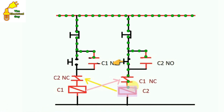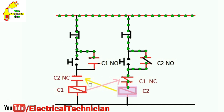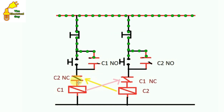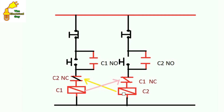Now if we press the start push button for C2, this circuit will be completed, current flows ahead and C2 contactor gets picked up. When C2 contactor picks up, two changes will occur. First, the auxiliary NO of C2 becomes NC. At the same time, the NC contact here becomes NO — it will be open here. So current will not flow from here even if we press the push button — this means C1 contactor will remain off. When we turn off C2, this becomes NO and the auxiliary contact again becomes NC, back to normal condition.